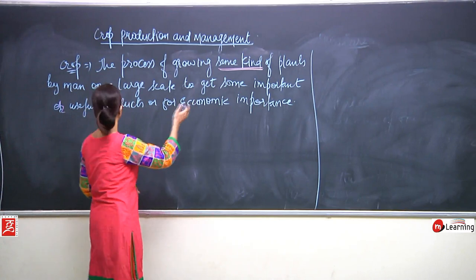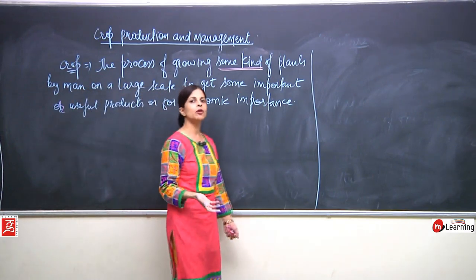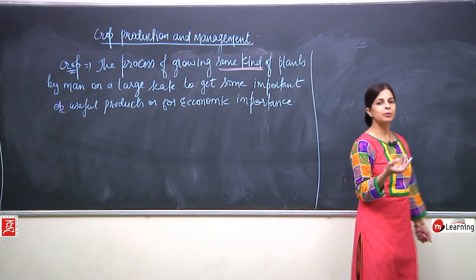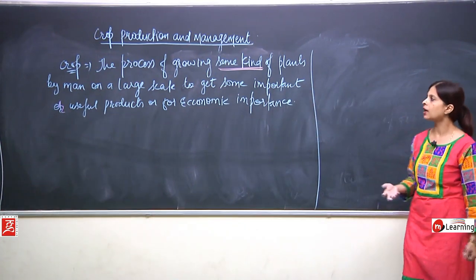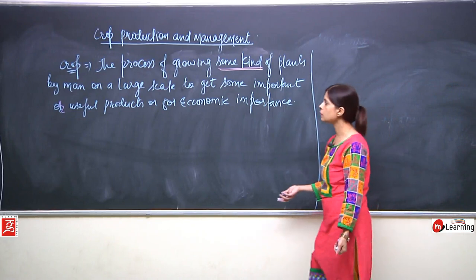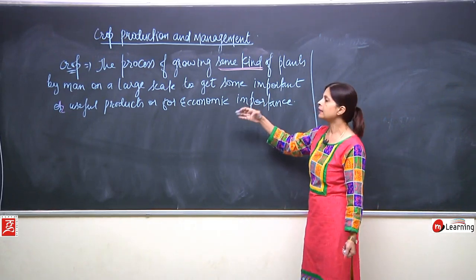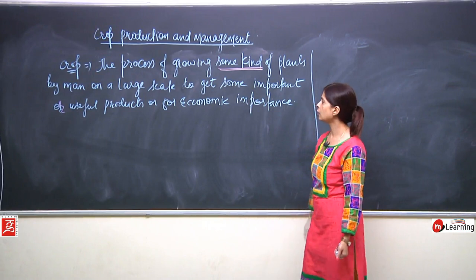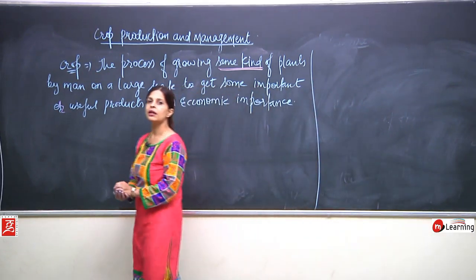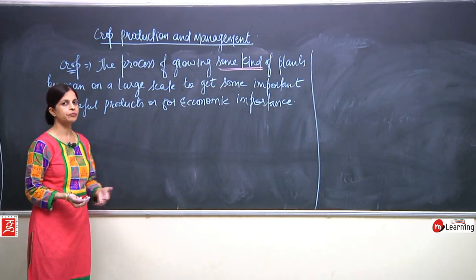What is the meaning of important and useful products? When we talk about crop production, the result may be wheat, rice, or similar — all these are useful products. It can also have economic importance, meaning it can be financially rewarding, it can be money-giving.